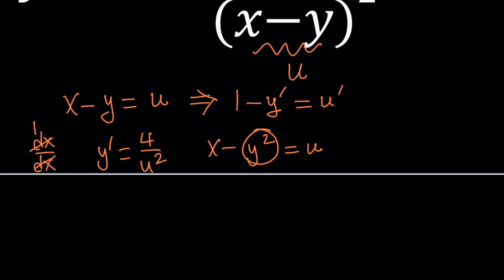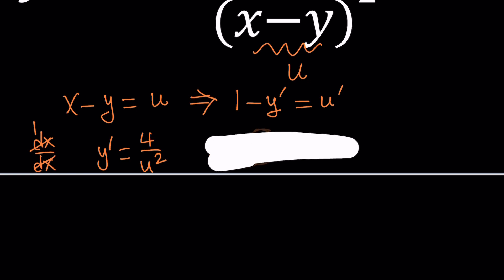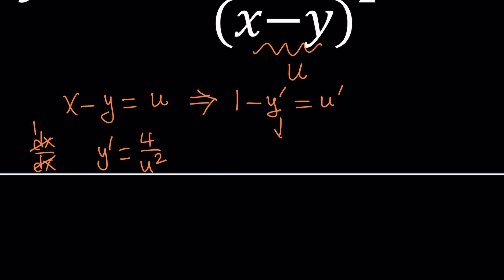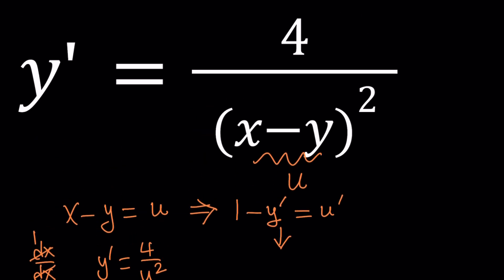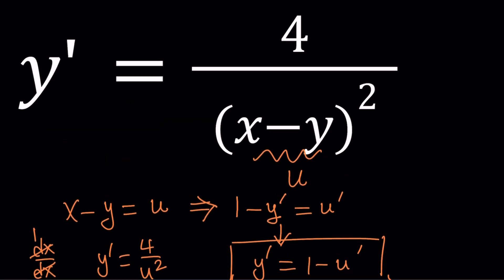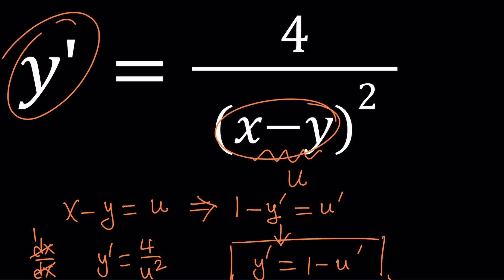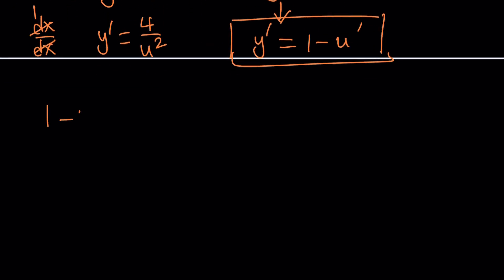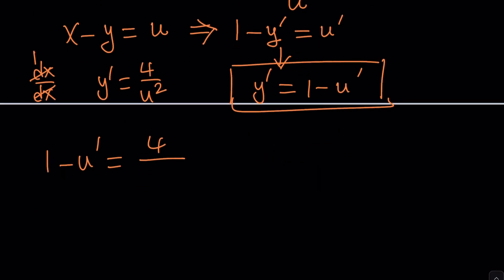But in this case we have a simpler one. Let's go ahead and take this expression and see how we can use it in our equation. Notice that in the original problem we have y prime, so let's isolate it. Switch these two around — you're going to get y prime equals 1 minus u prime. So now I can replace y prime with that in my original equation, and x minus y with u. So now we get 1 minus u prime is equal to 4 divided by u squared.